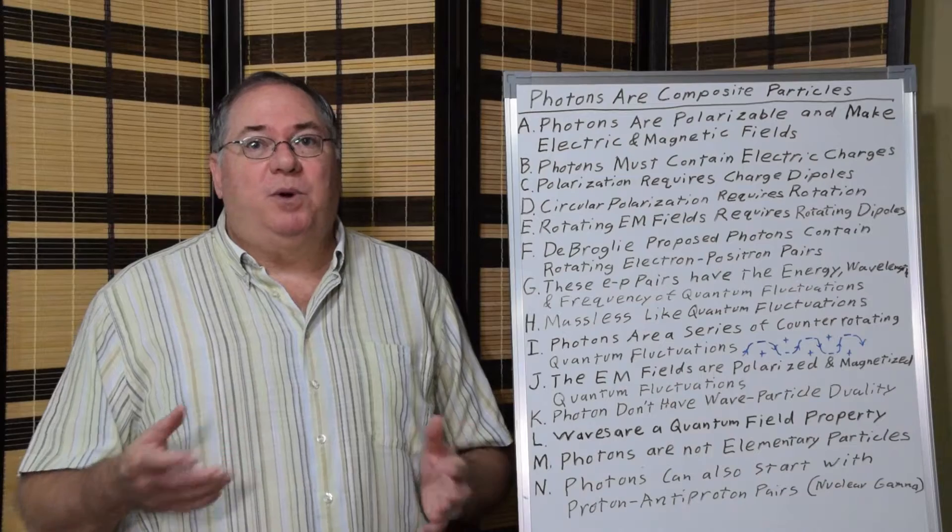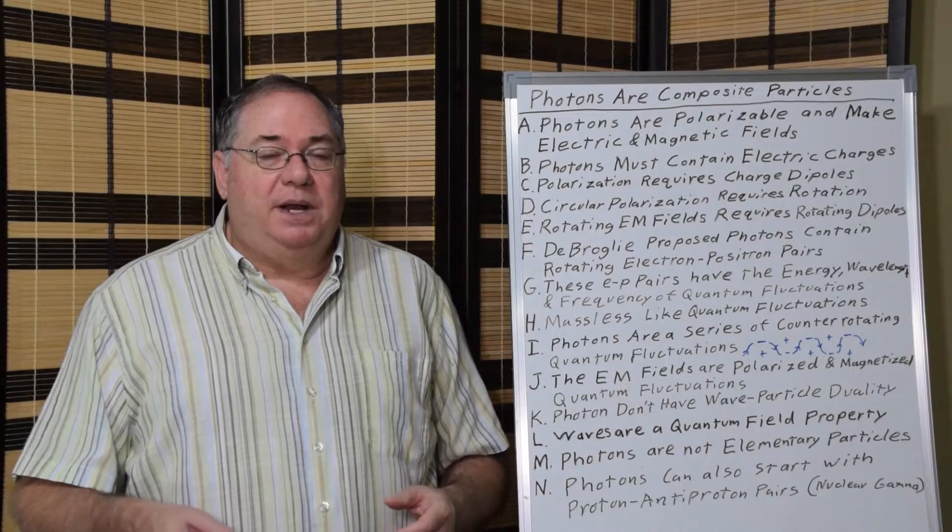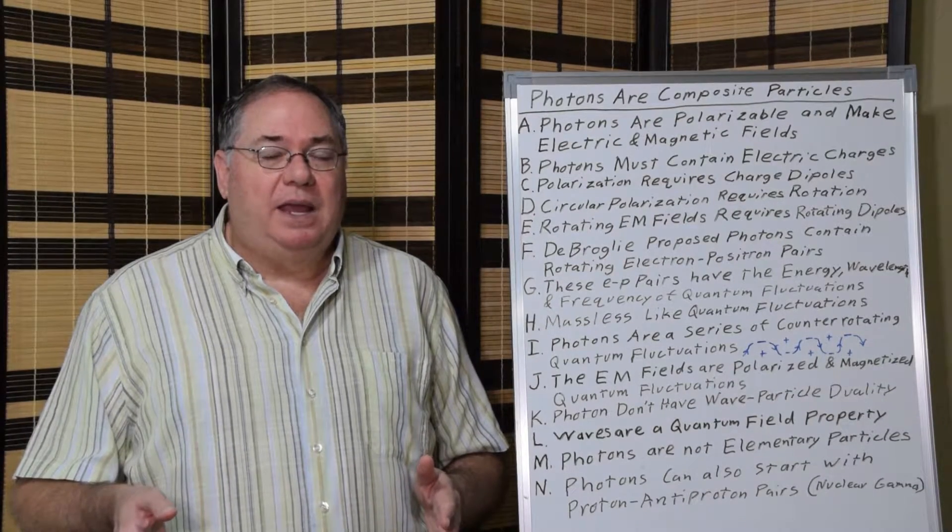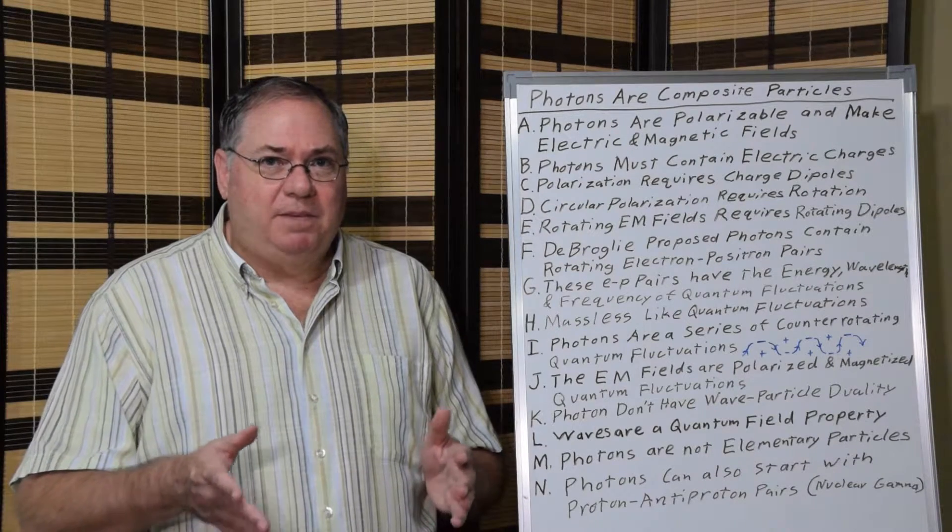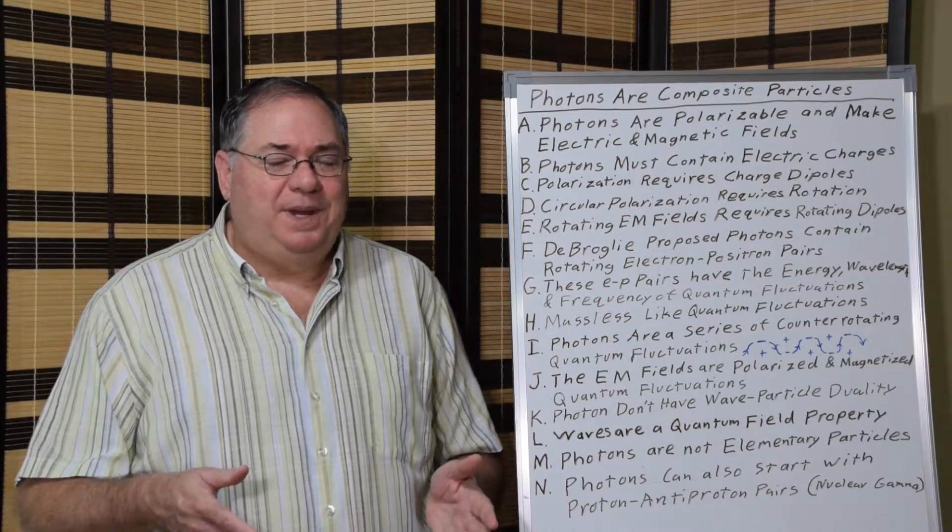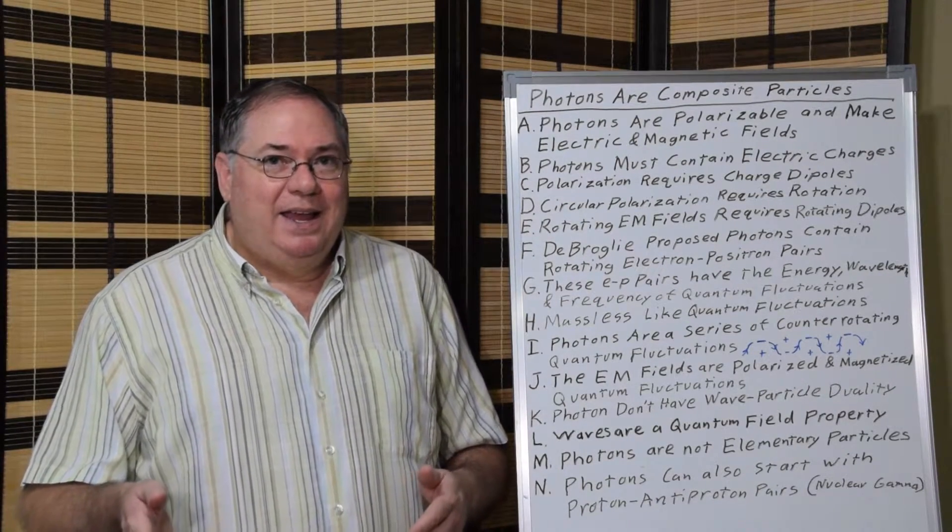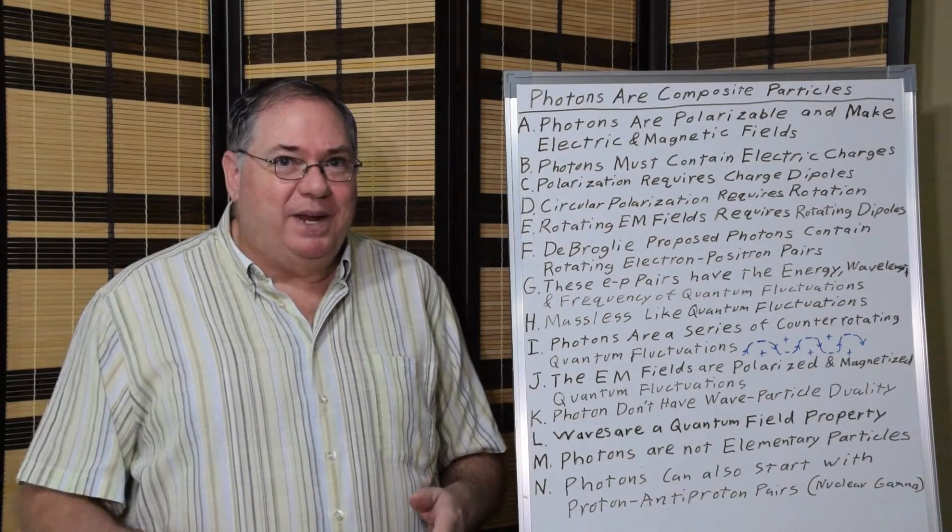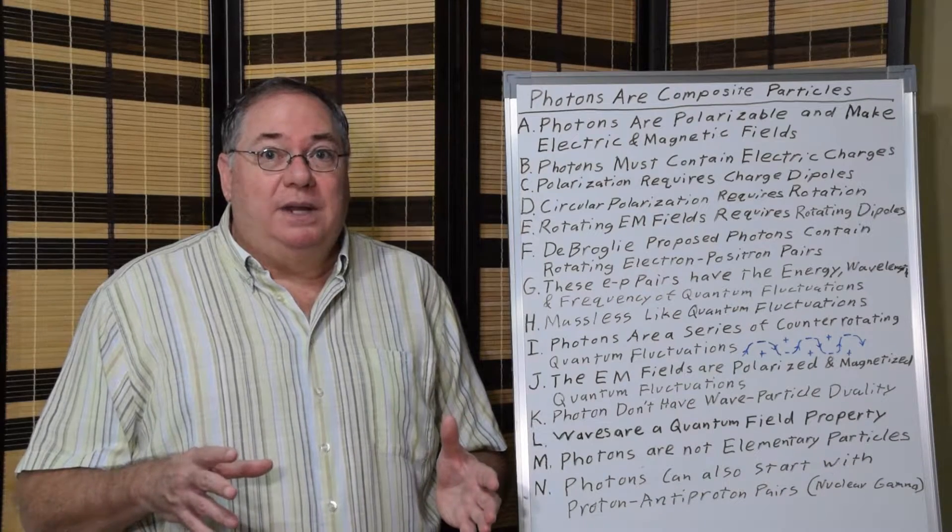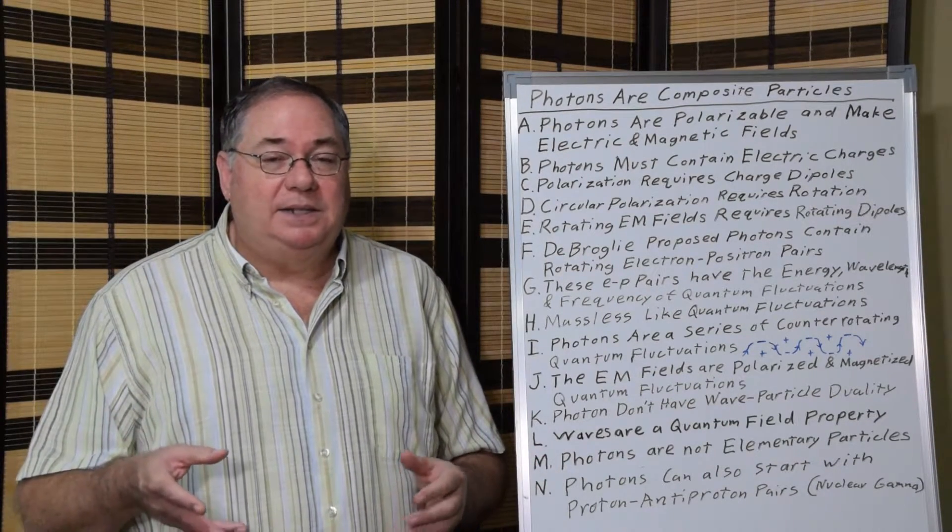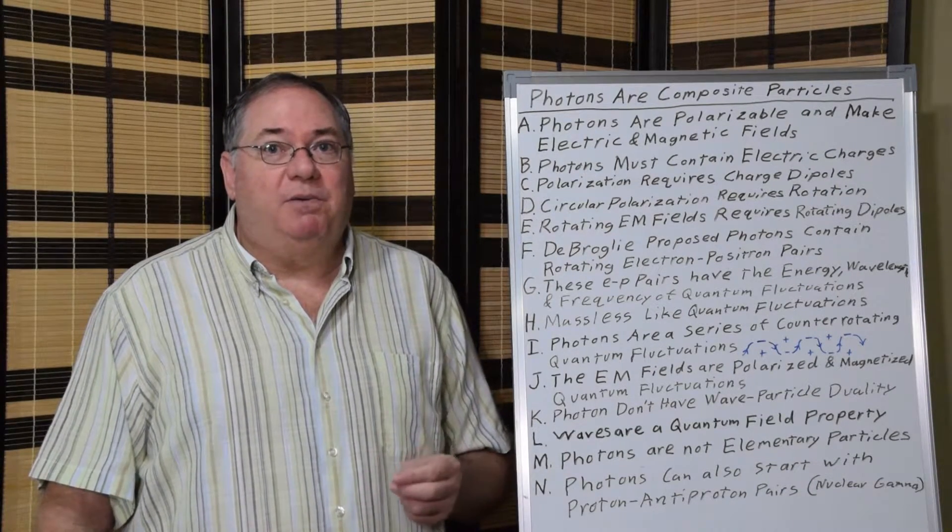So what de Broglie did next is he tried different fermion neutrinos. But his neutrino theory of light, which oddly is taught in some classes while the electron-positron model is not, even though the electron-positron model is correct, although not precisely the way he taught it. But the neutrino model is what we hear about, and that's similar but can be easily shown to be wrong.